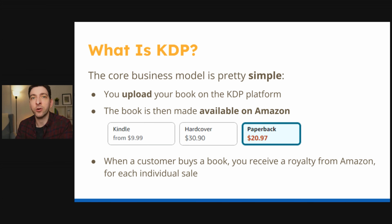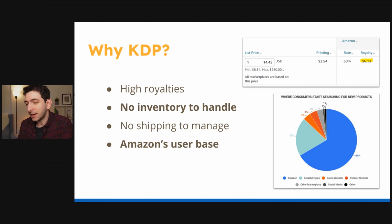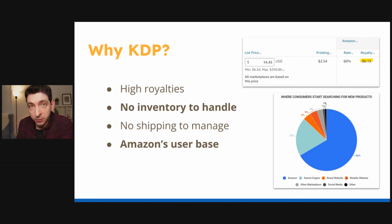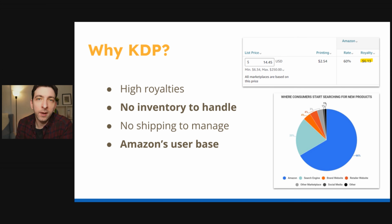I'm focused on creating a sustainable business that will generate income for you for the next weeks, months, and years. But even if you just want to see your passion book published, you'll find this course very useful. Compared to a traditional publisher, you get 100% creative freedom. The royalty scheme is very generous — 70% of the price for ebooks and 60% for paperback and hardcover, minus printing costs. There is no inventory to handle and no shipping to manage. Books are printed and shipped by Amazon directly, and you take advantage of Amazon's incredible user base for free.